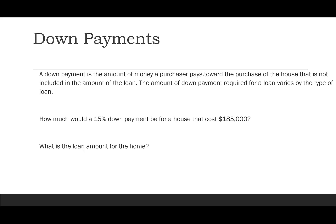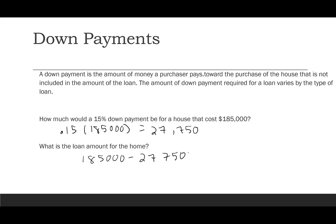For homes, a down payment is the amount the purchaser pays toward the purchase that is not included in the loan. The required amount varies by loan type and lender. Let's calculate a 15% down payment on a $185,000 house: 0.15 × $185,000 = $27,750 down. The loan amount is $185,000 minus $27,750, which is $157,250.